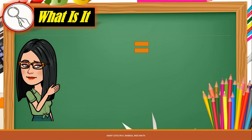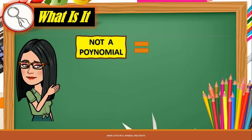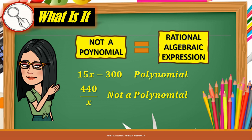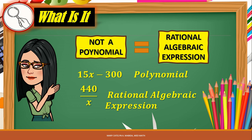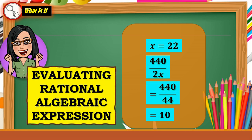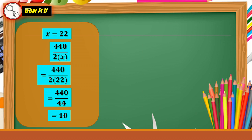Expressions which are not polynomials are called rational algebraic expressions. For example, 15X minus 300 is a polynomial, while 440 over X is not a polynomial — it is a rational algebraic expression. When a variable is substituted with a number in a rational expression, it is called evaluating rational algebraic expressions. Algebraic expressions can be evaluated by substituting the given value in each quantity or variable.